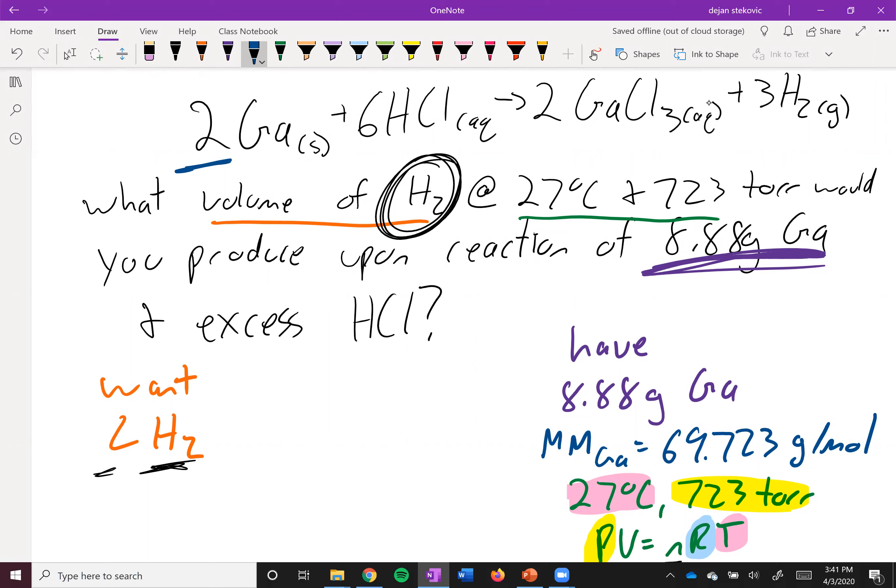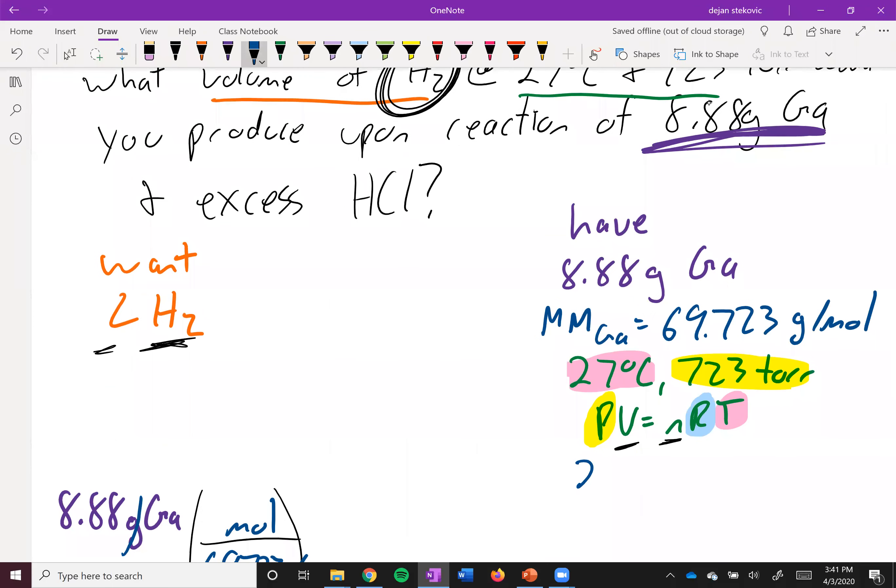Right. So we can see for every two galliums, we produce three H2s. So, yeah, shoot, I already used blue. Red, I guess.